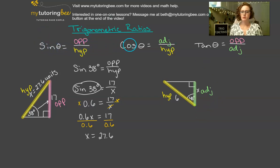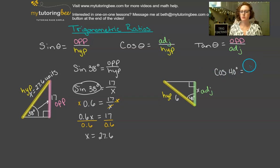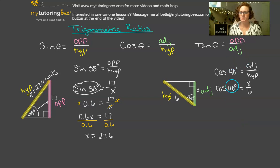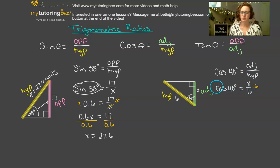Again, it's all in relation to the angle that we're looking at. Since we're looking at that 40 degree angle, we would call this side the adjacent side. Let's look at our trigonometric ratios and figure out which one deals with adjacent and hypotenuse — that's cosine. So we're going to write out: cosine of 40 degrees equals adjacent over hypotenuse. So first we need to multiply both sides of the equation by 6, which leaves us with 6 times the cosine of 40 degrees equals x.